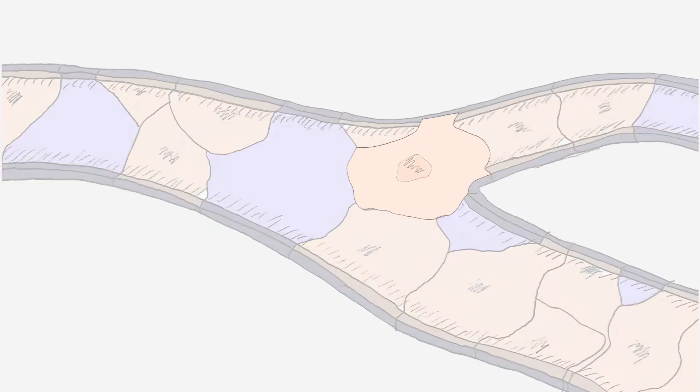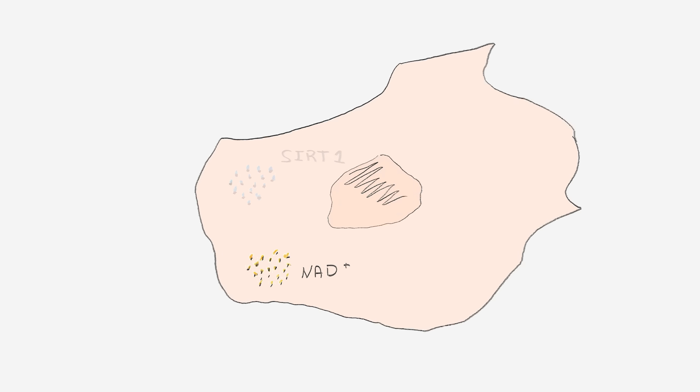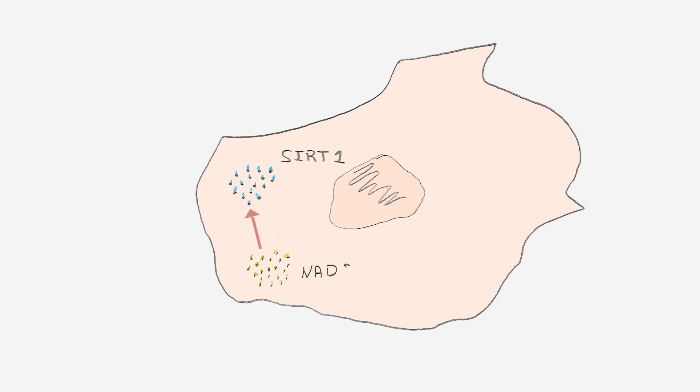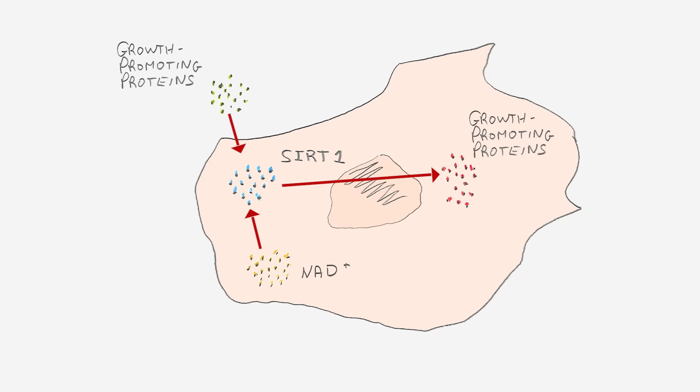A vicious cycle indeed. The two key players in the crosstalk between blood vessels and muscles are a molecule called NAD and a protein called SIRT1. NAD boosts SIRT1, which in turn enables the conversation between muscles and blood vessels.